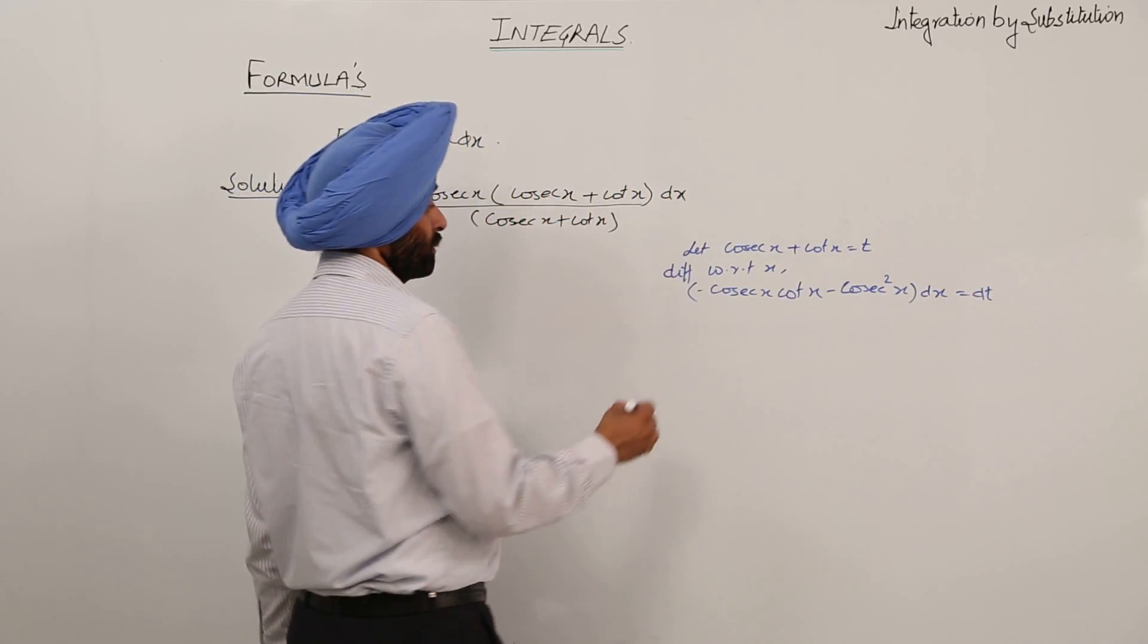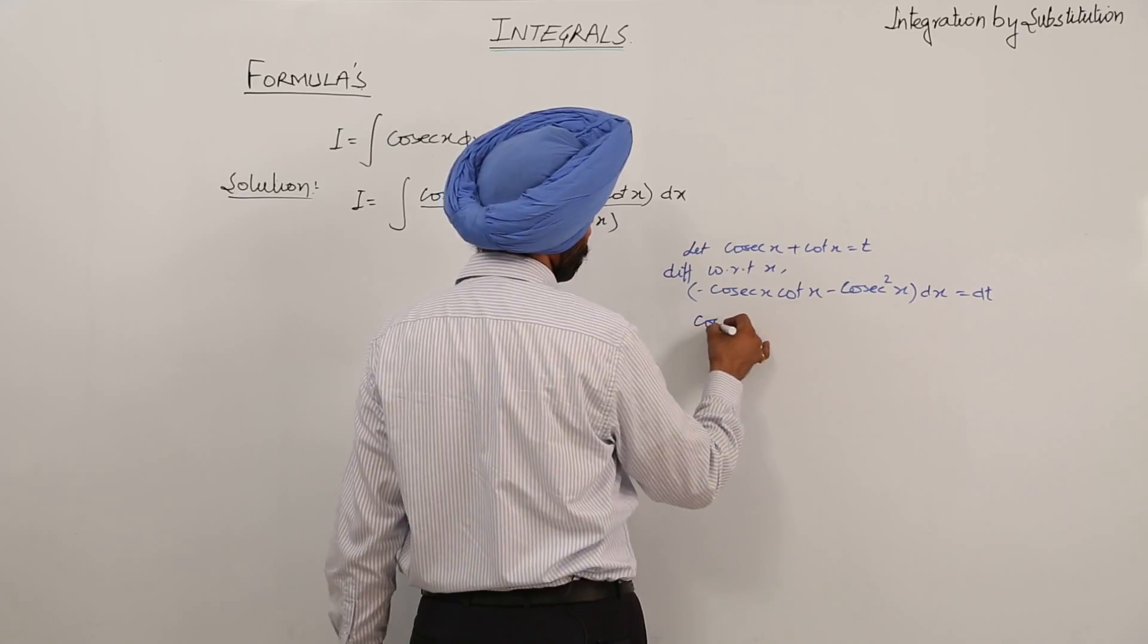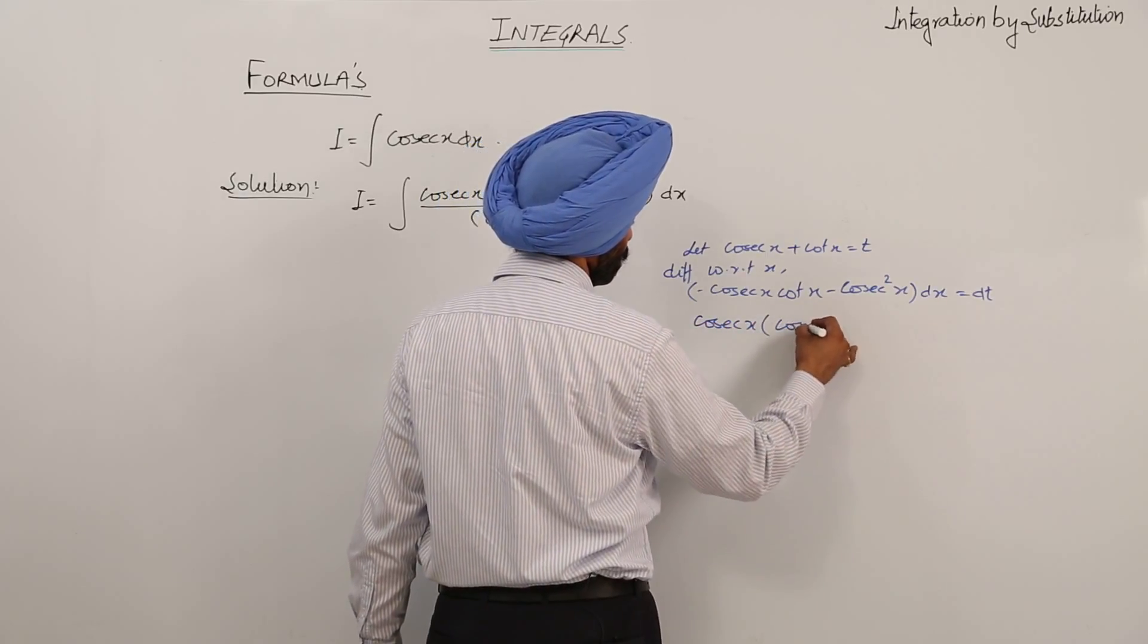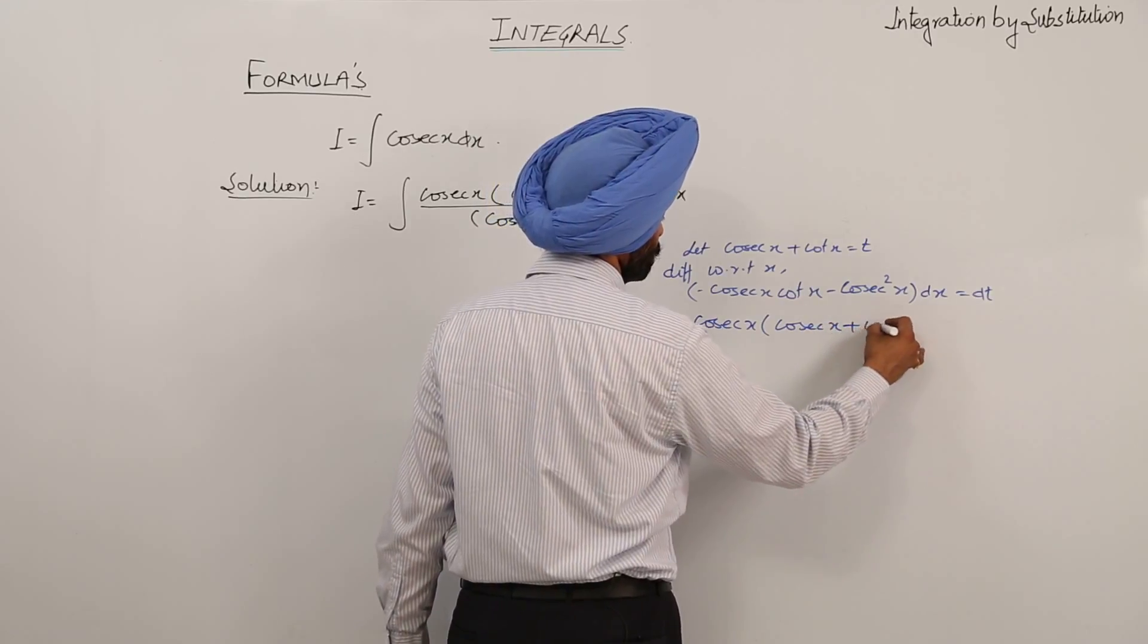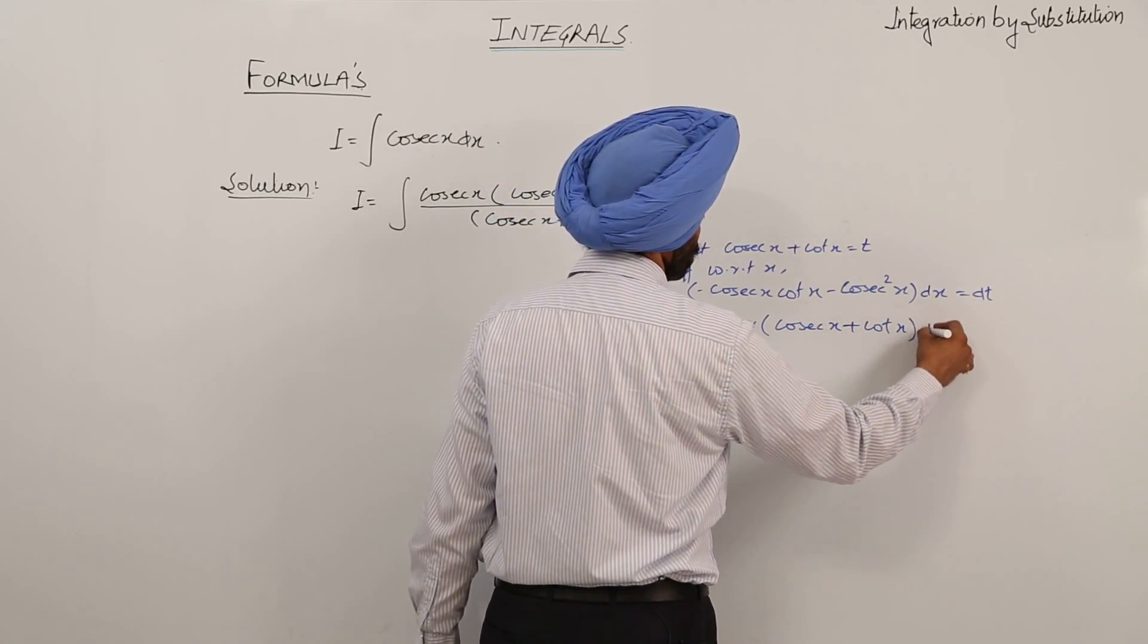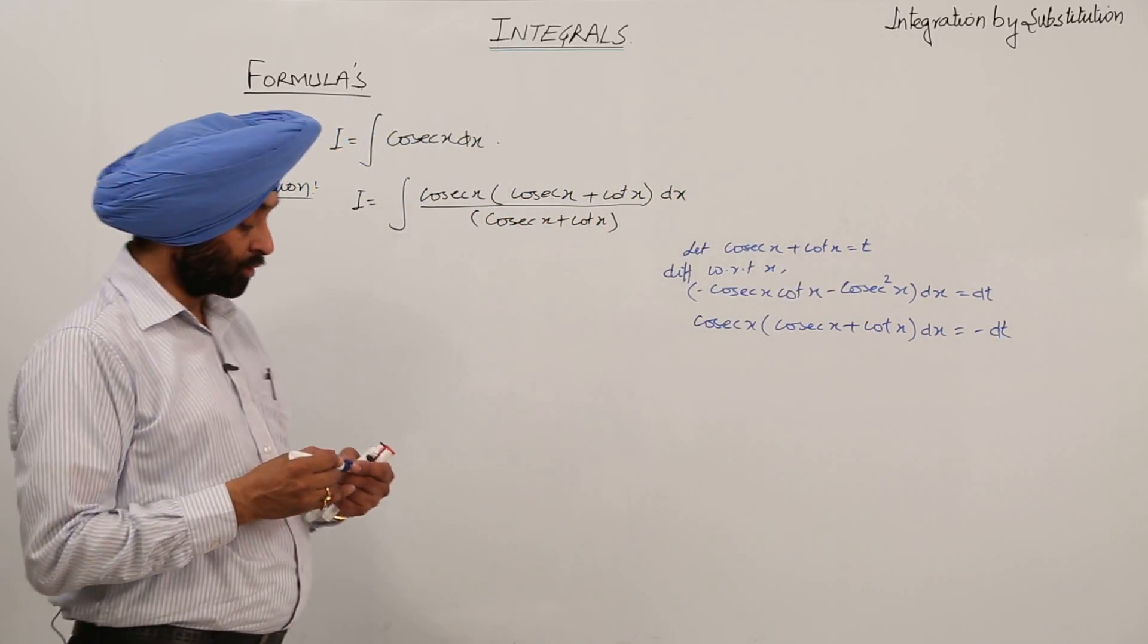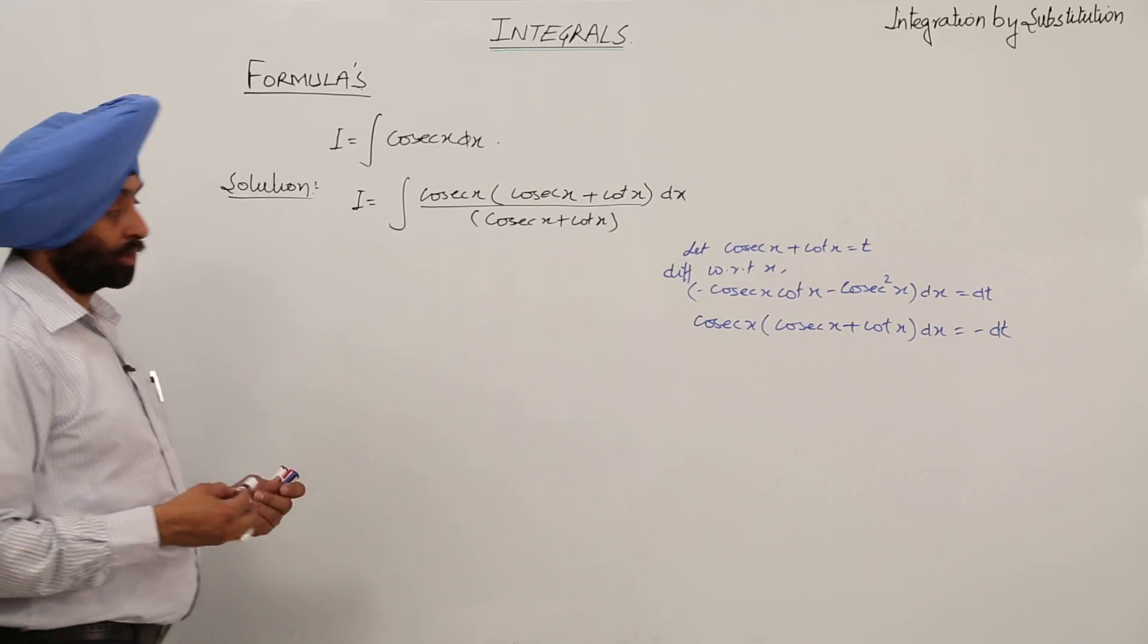Or now this can be written as cosecant x common: cosecant x plus cot x dx equals minus dt, taking minus common from both terms.